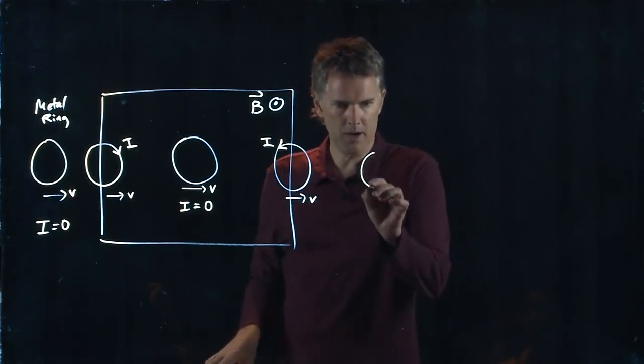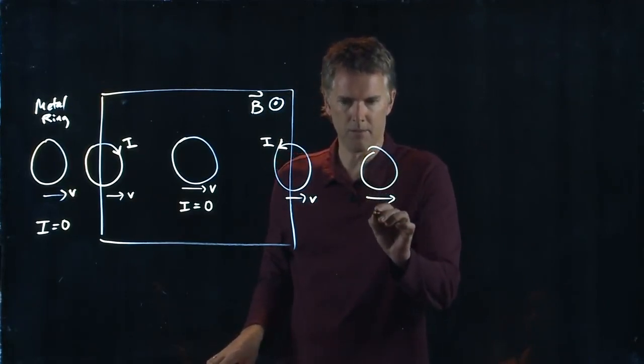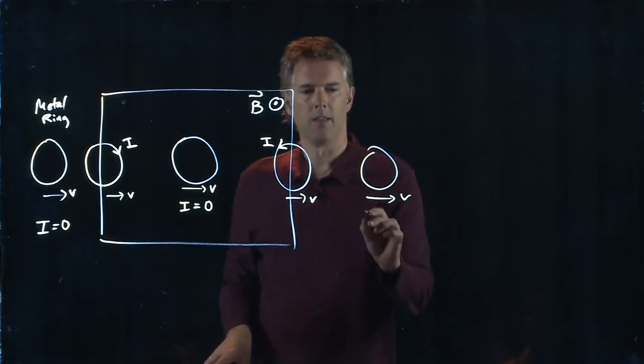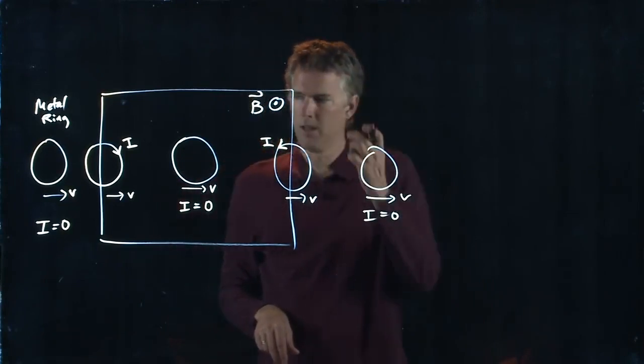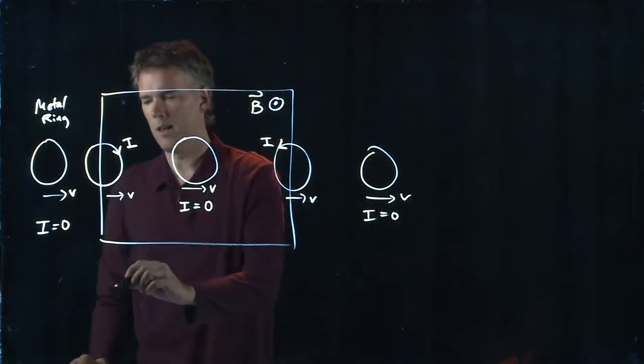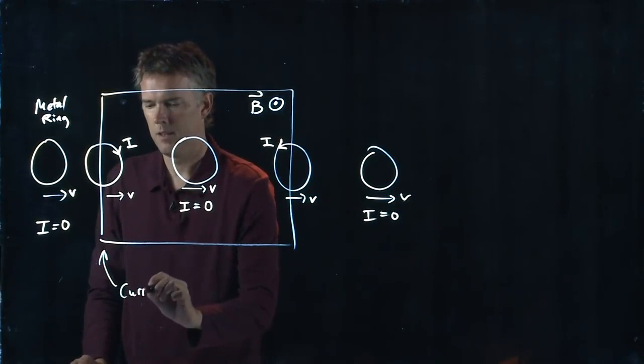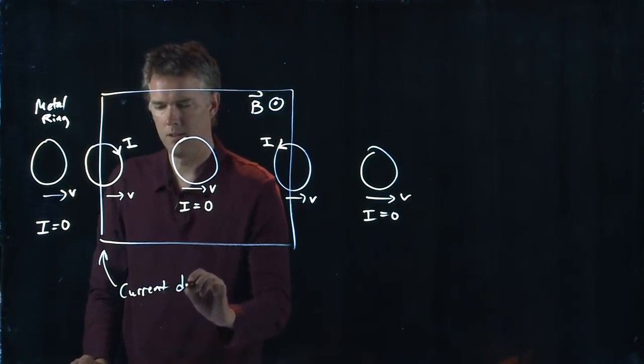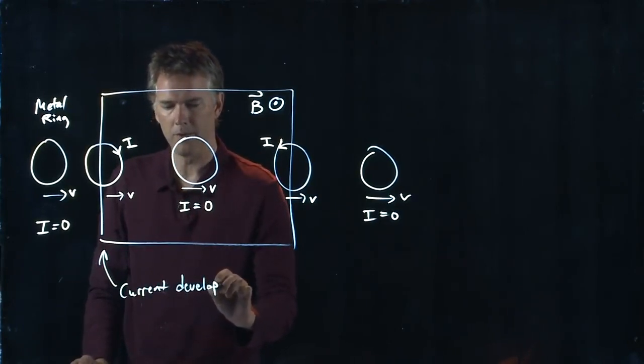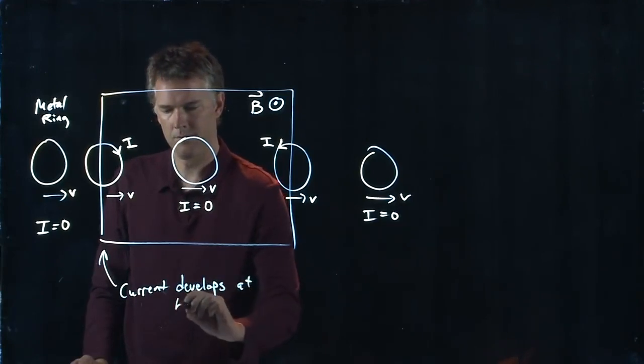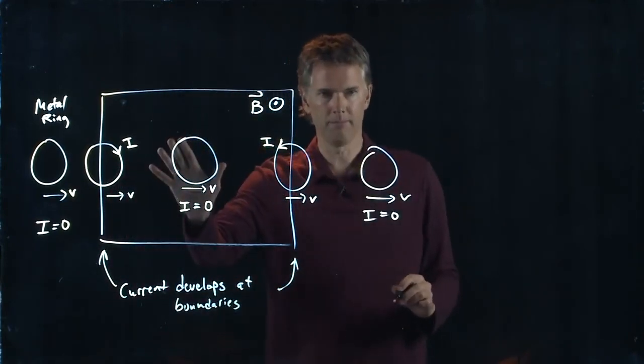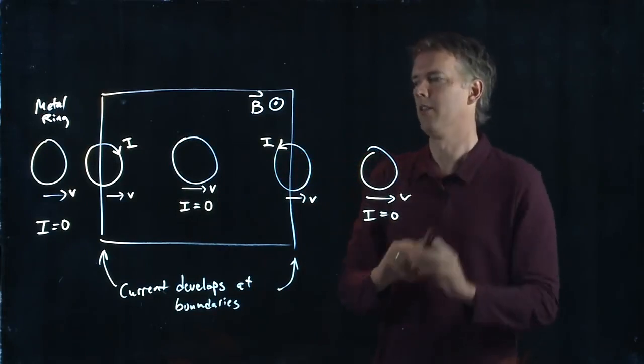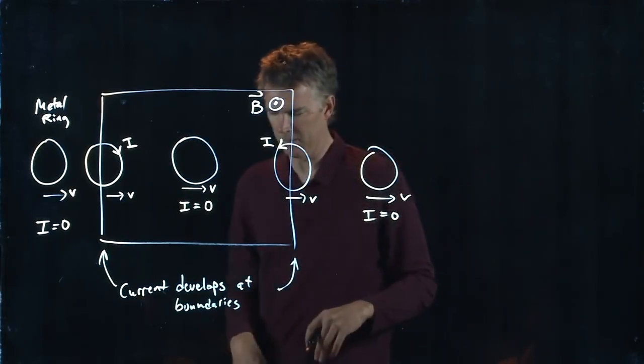And then finally, when it gets back out here, and it's still moving along at V, then current goes back to zero. So the only time current develops is at these boundaries. Anywhere it's uniform or zero, then there is no current that develops in the loop.